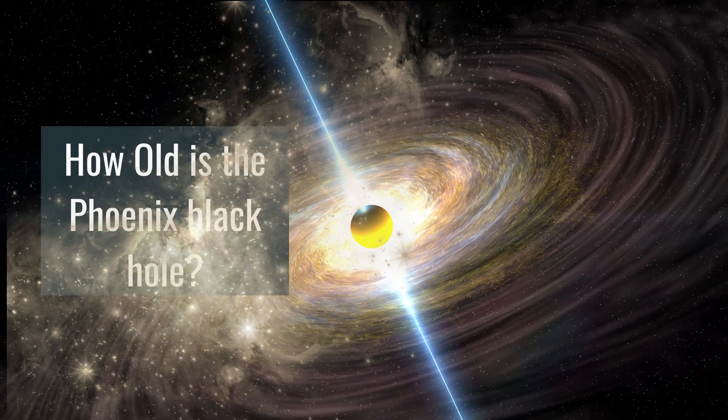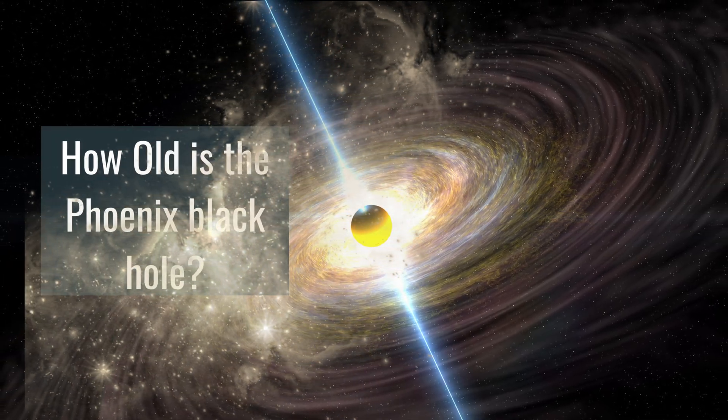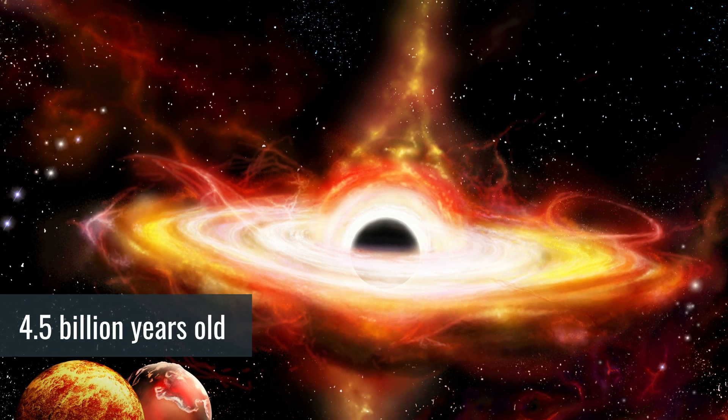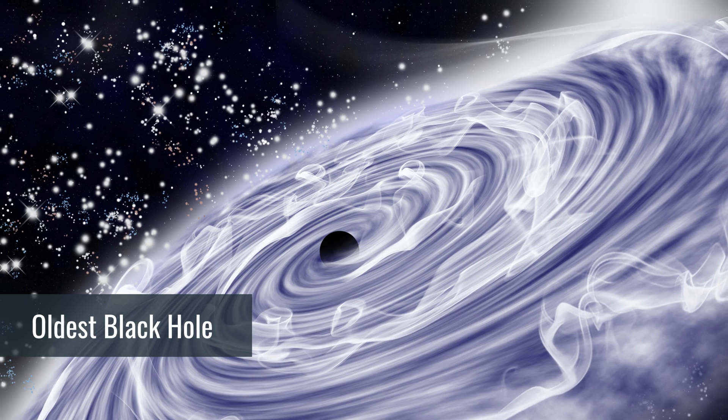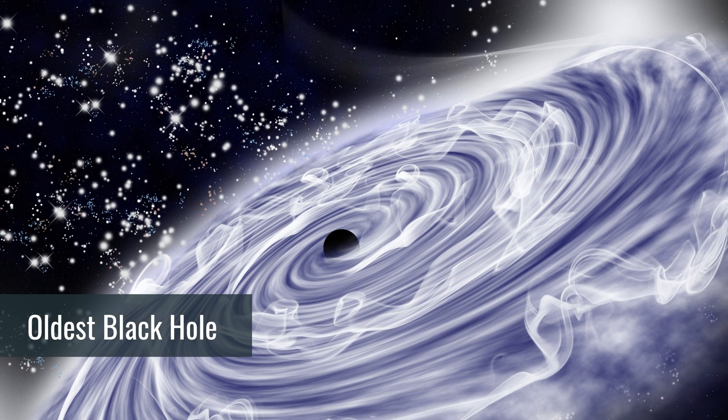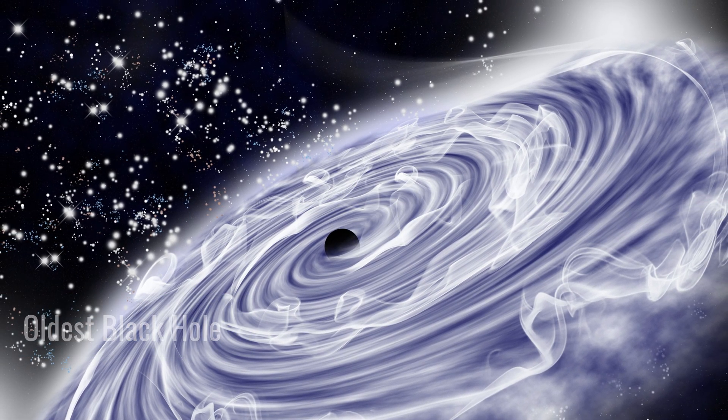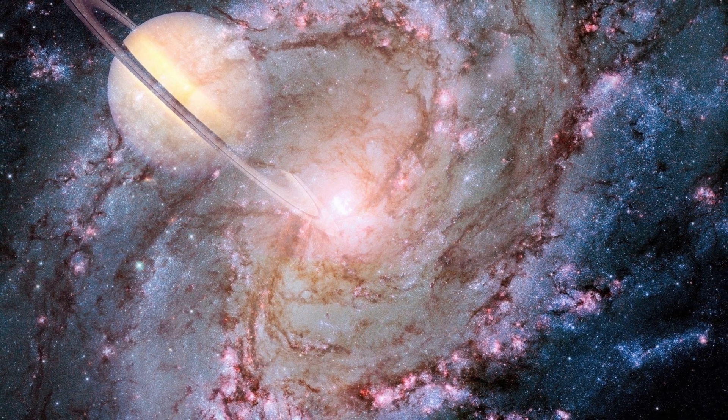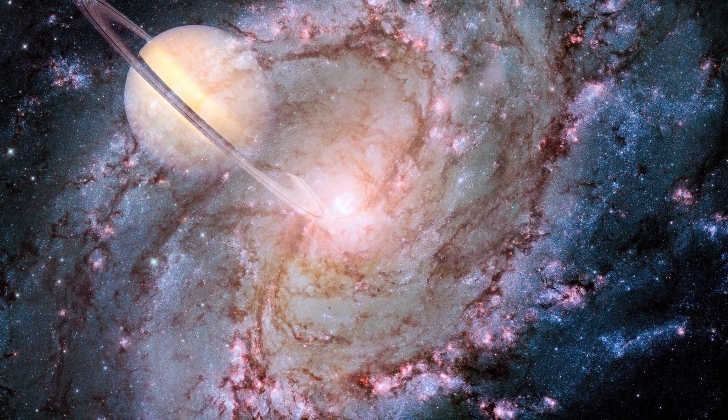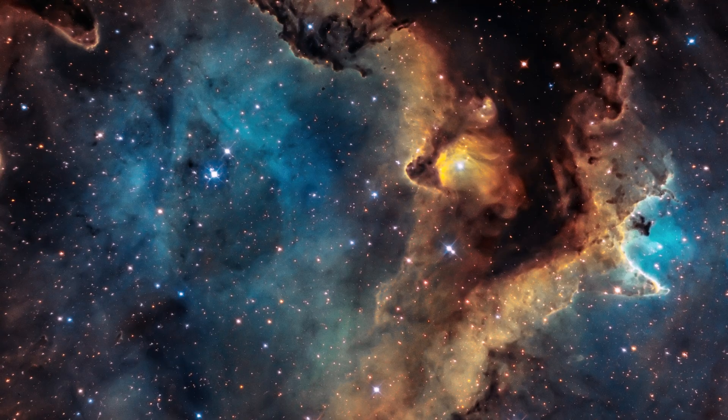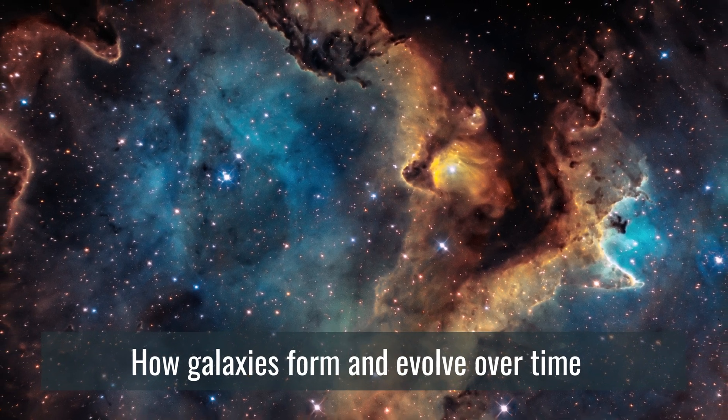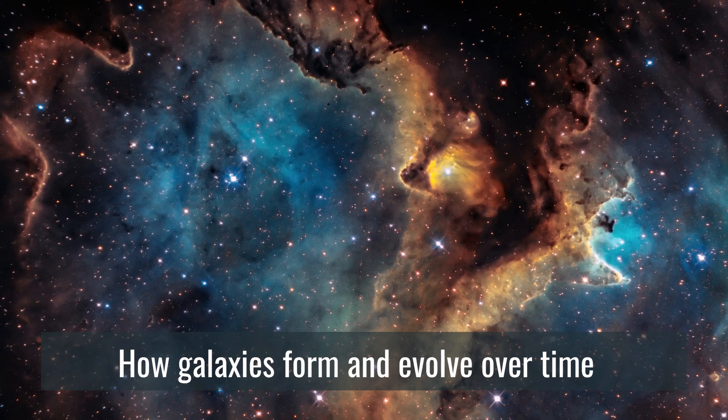How old is the Phoenix black hole? The Phoenix black hole is 4.5 billion years old, making it one of the oldest known black holes in the universe. Its age makes it an invaluable source of information on some of the earliest stages of galactic evolution, giving us insight into how galaxies form and evolve over time.